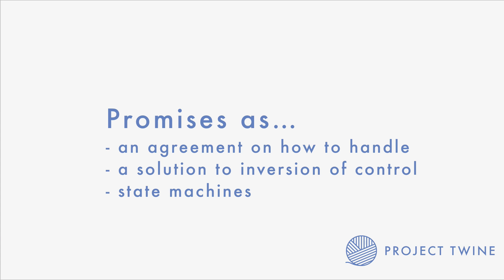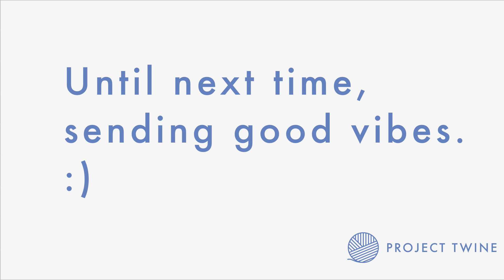In this episode I wanted to hammer in the point that promises are much more than just syntactic sugar. They're a sort of agreement on how to handle asynchronous code — a solution to the problem with callbacks that is the inversion of control. You can imagine them as state machines, and because of these things we can rely on promises a lot better than we were able to rely on callbacks. I hope this helped, and until next time — peace.